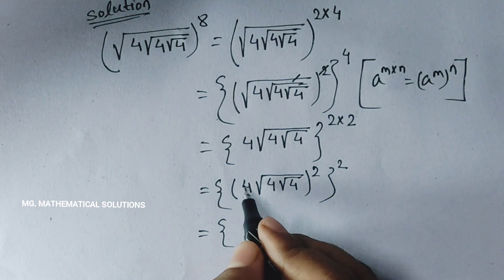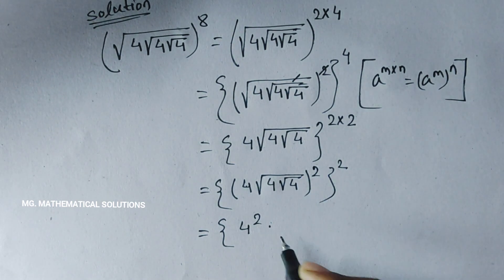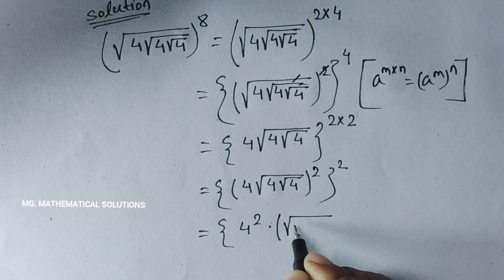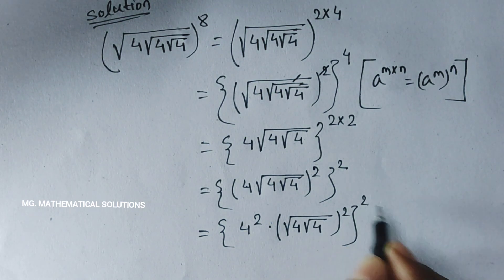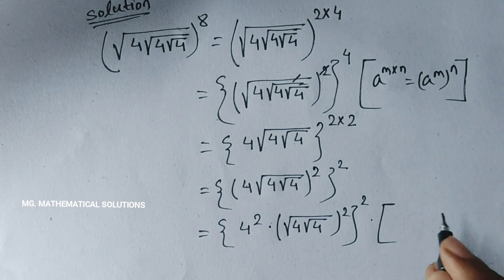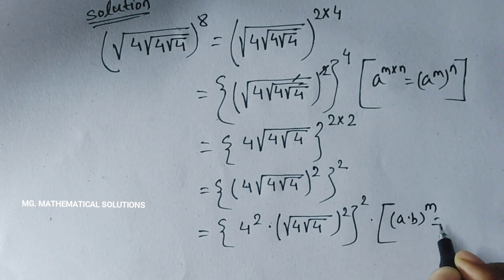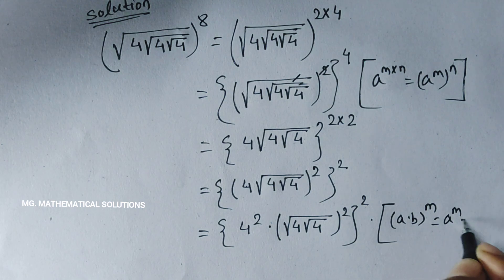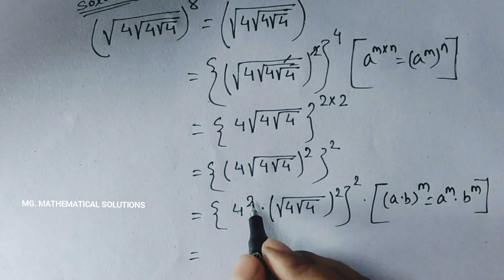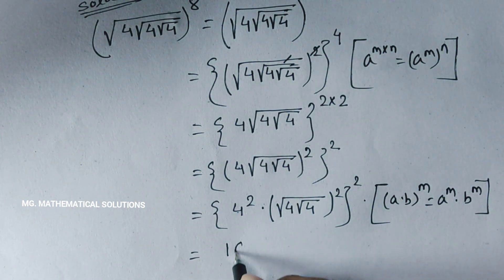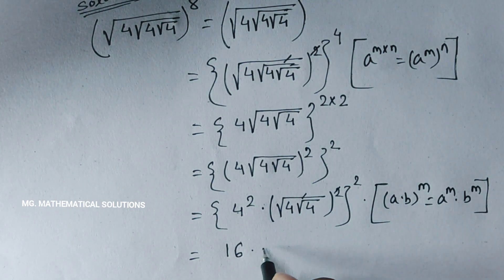Now, 4 squared times root under 4, root under 4, whole squared. Here we use the formula a into b, whole to the power m, equal to a to the power m into b to the power m. That gives 4 squared, which is 16, and the square root is cancelled.